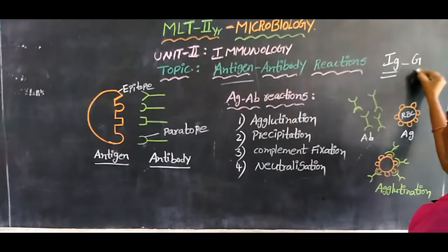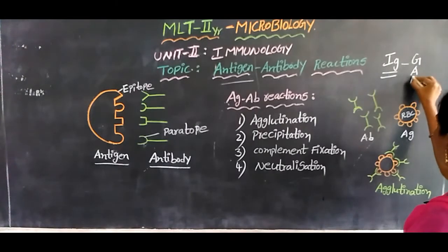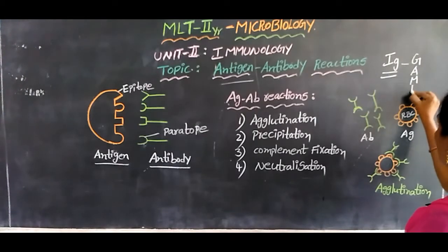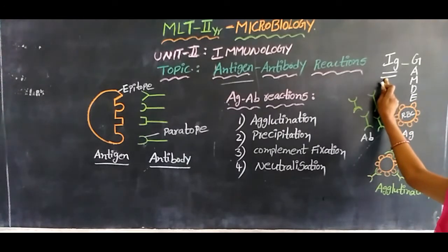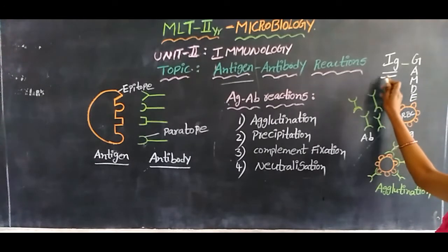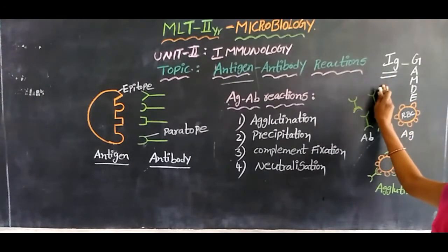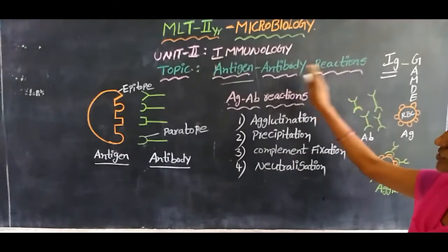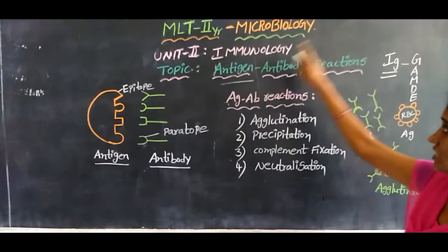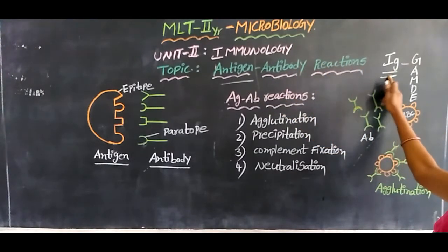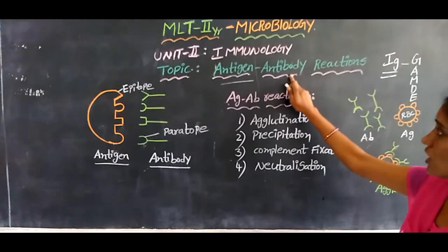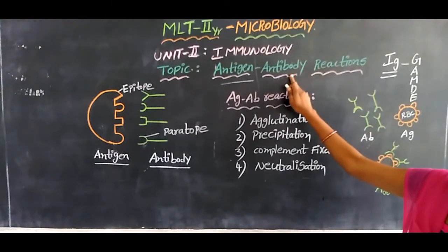Immunoglobulins are five types: G, A, M, D, and E — which stand for gamma, alpha, mu, delta, and epsilon. These immunoglobulins are present in our body and are produced upon antigenic stimulation. Immunoglobulins are also called antibodies.